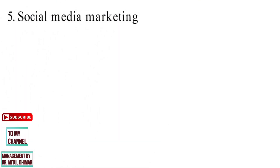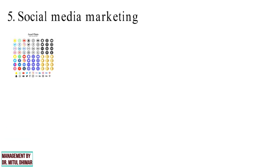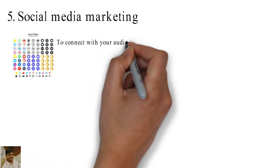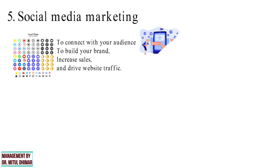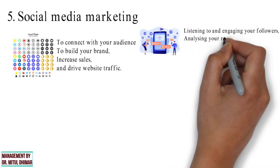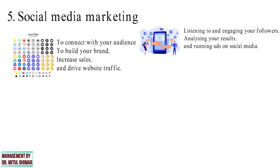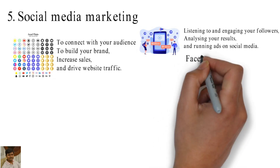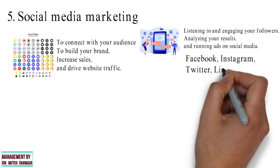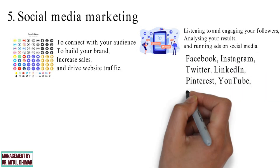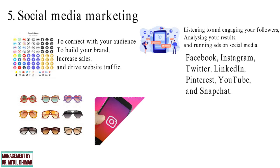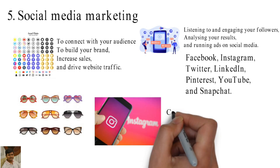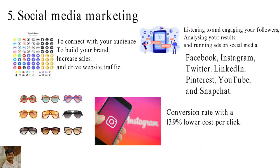Point number 5: Social Media Marketing. Social media marketing is the use of social media platforms to connect with your audience, build your brand, increase sales, and drive website traffic. This involves posting great content on your social media profiles, listening to and engaging your followers, analyzing your results, and running ads on social media. The major social media platforms are Facebook, Instagram, Twitter, LinkedIn, Pinterest, YouTube, and Snapchat. For example, Mailer, an international sunglasses brand, used Instagram ads to increase online sales and conversion rate with a 13.9% lower cost per click.